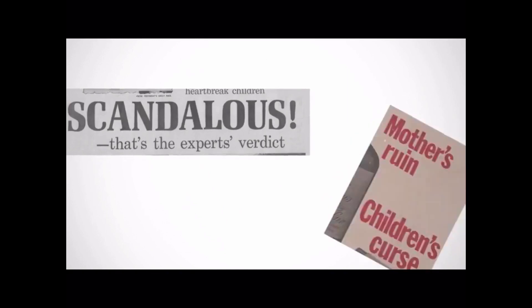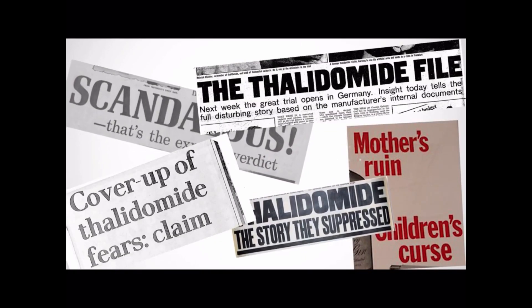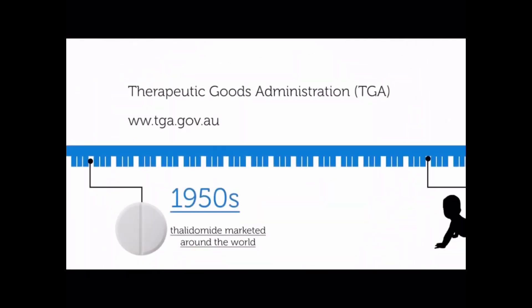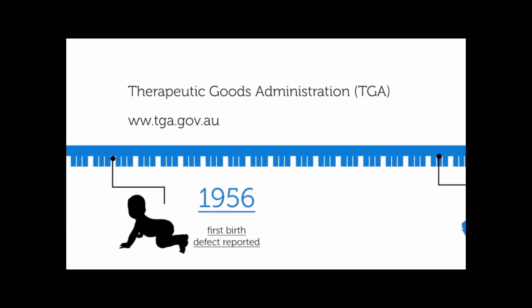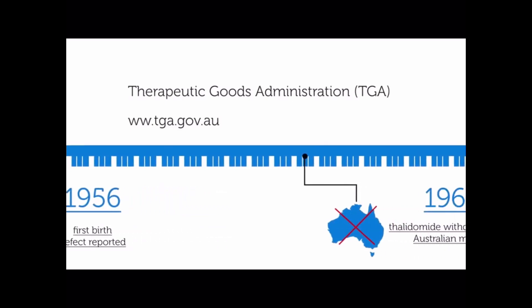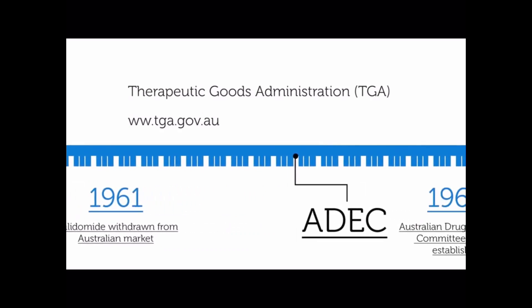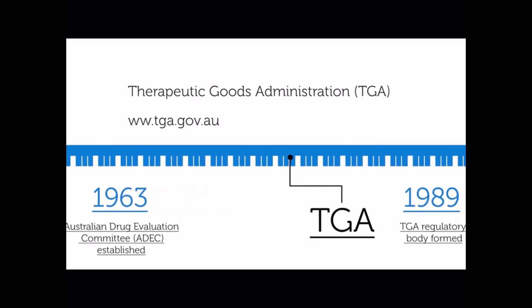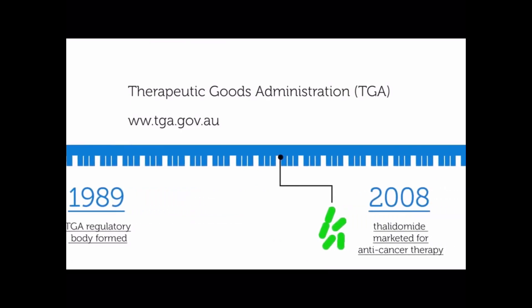In 2014, the Victorian Supreme Court signed off on an $89 million class action for the victims affected by thalidomide in Australia and New Zealand. To protect the community from another thalidomide tragedy, the Australian government established the Therapeutic Goods Administration to regulate and control drug use and development. Today, thalidomide is tightly regulated and is being used in anti-cancer therapy. It carries a clear warning stating that even a single dose can cause birth defects.